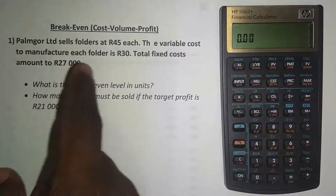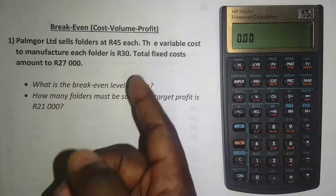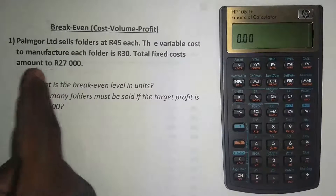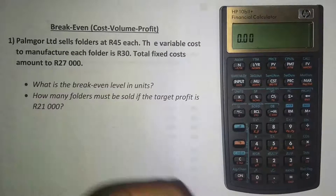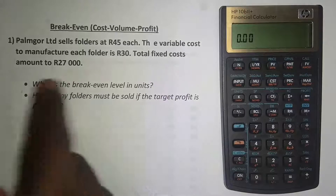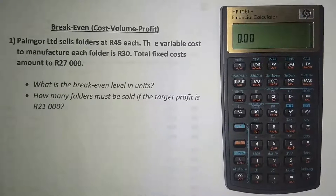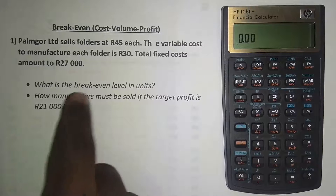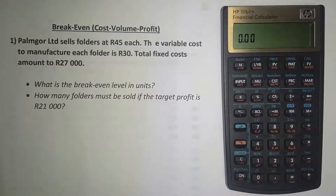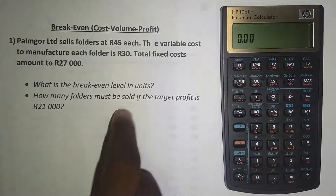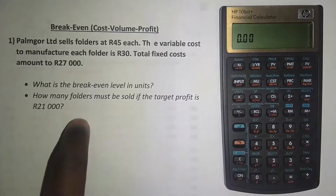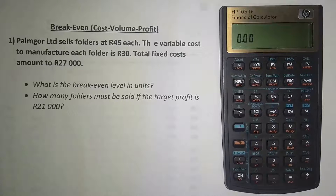We have an example here. We are told that Pamgo Limited sells folders at 45 Rand each. The variable cost to manufacture each folder is 30 Rand. Total fixed costs amount to 27,000 Rand. We are asked: what is the break-even level in units?